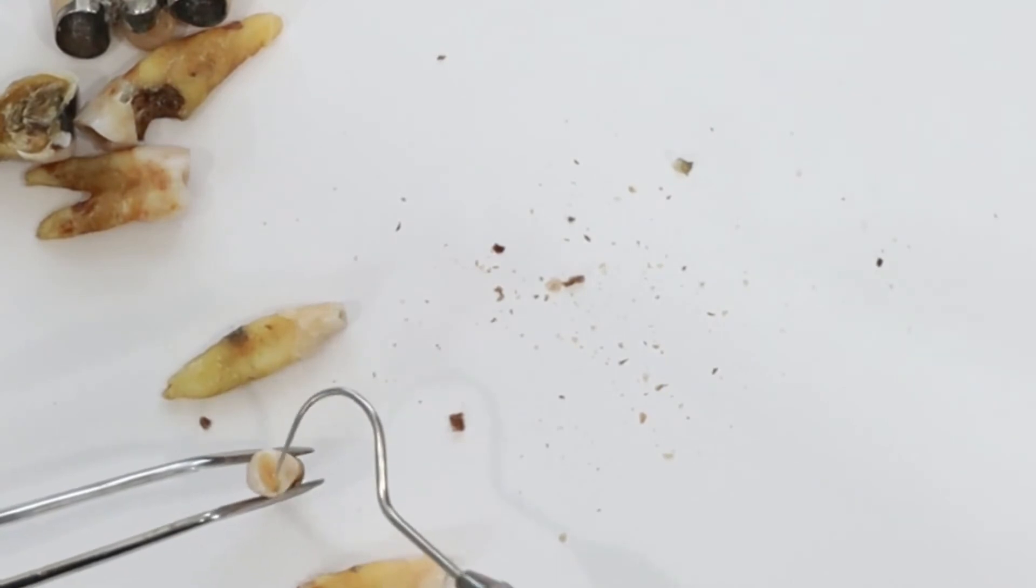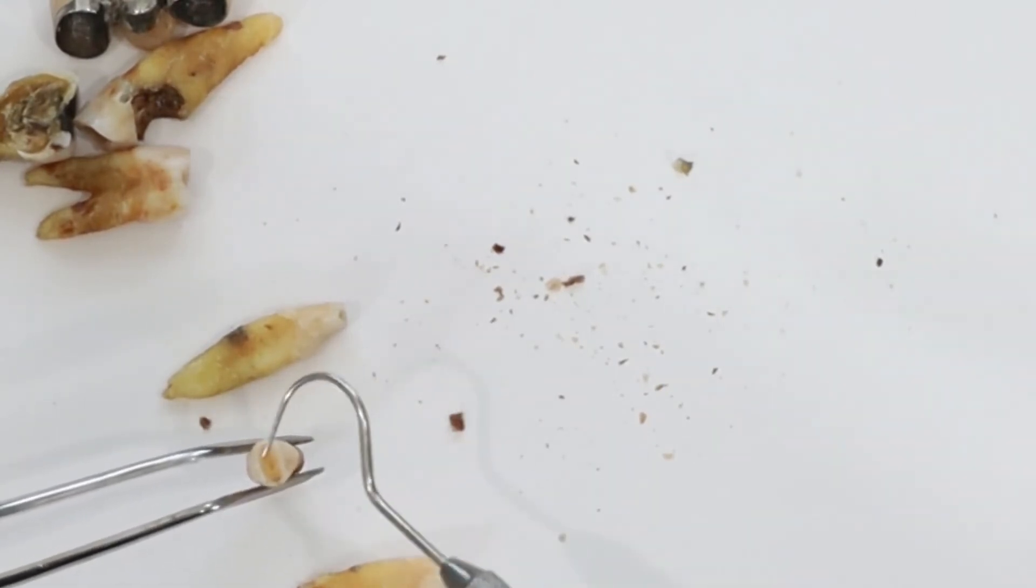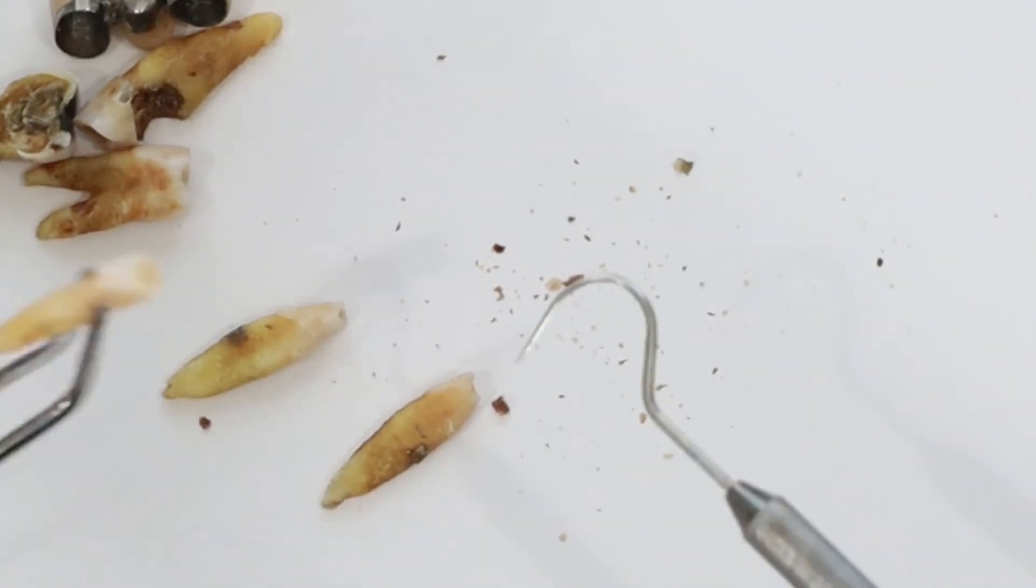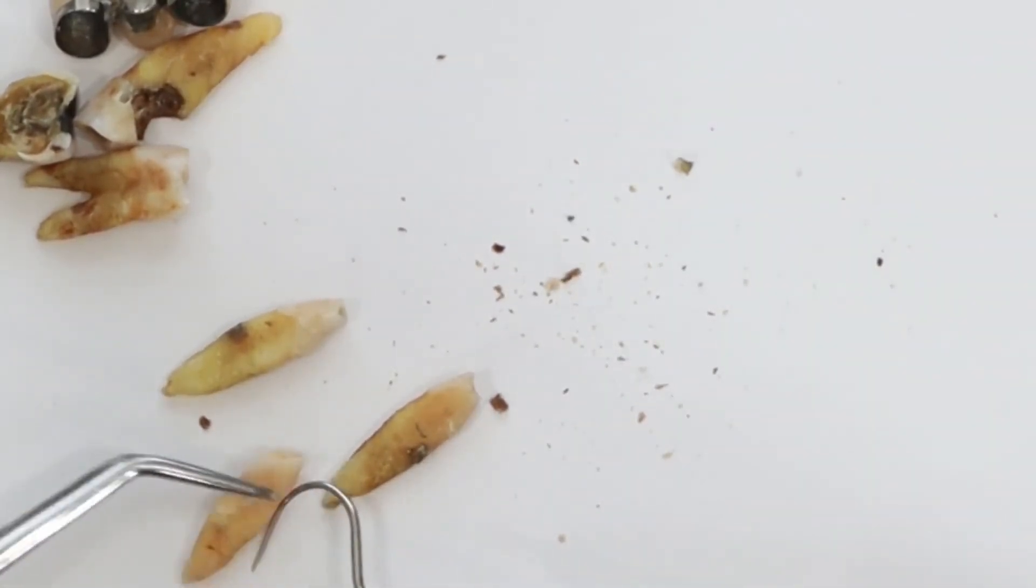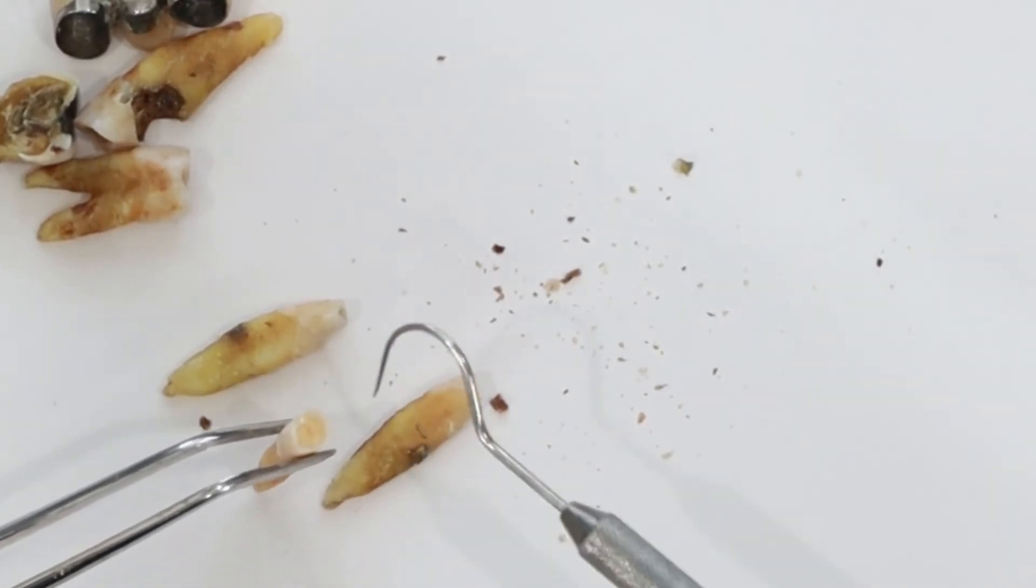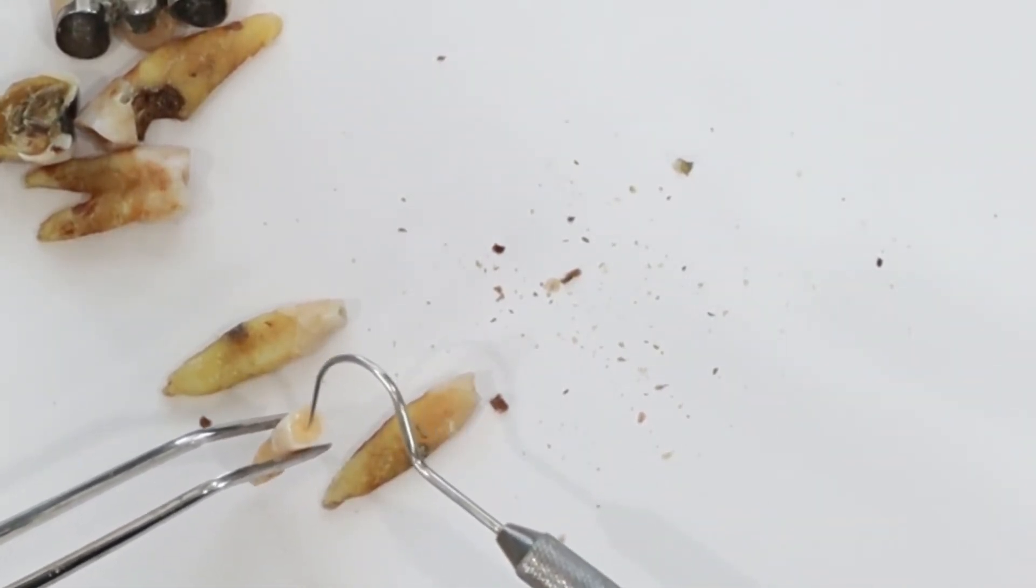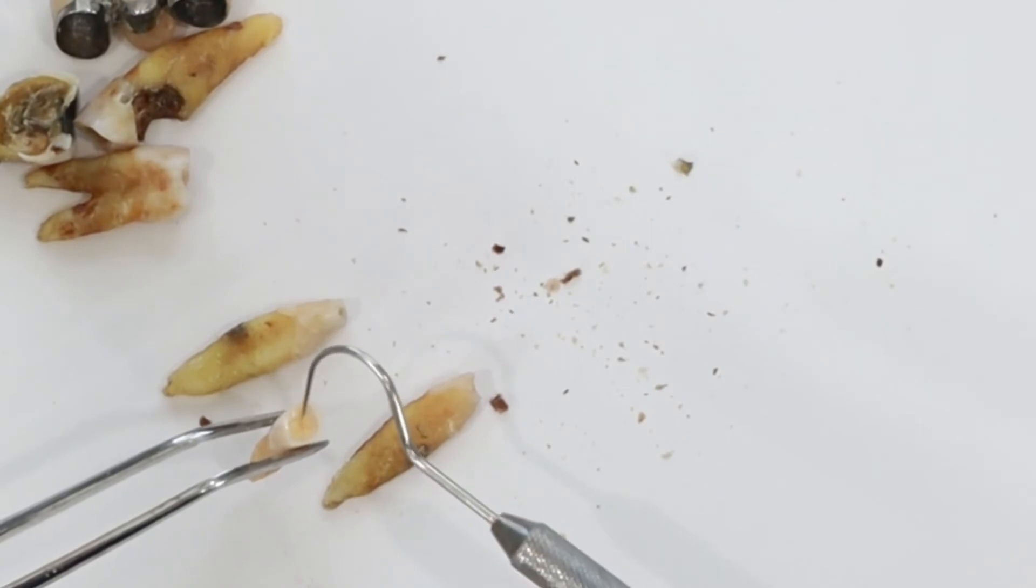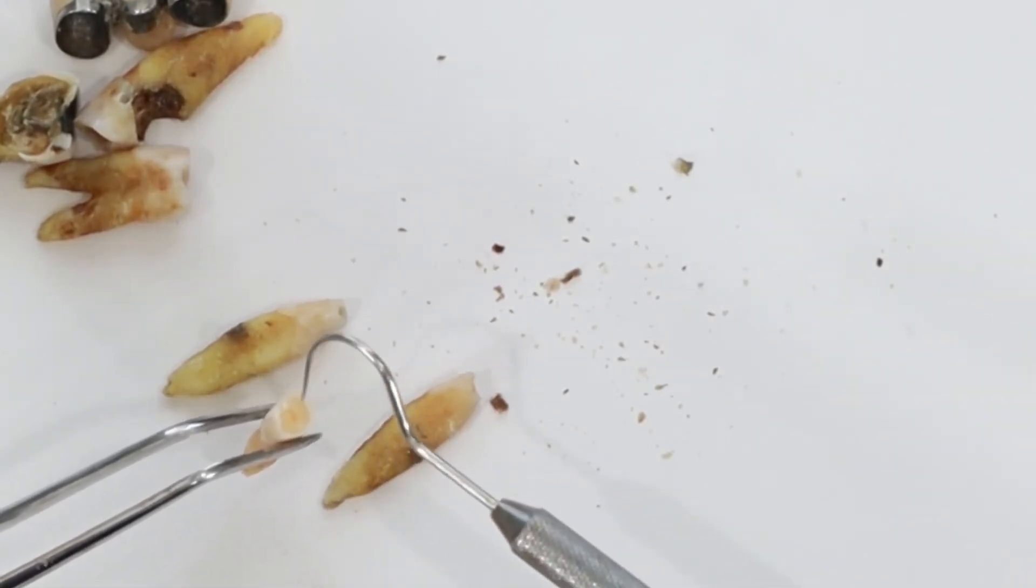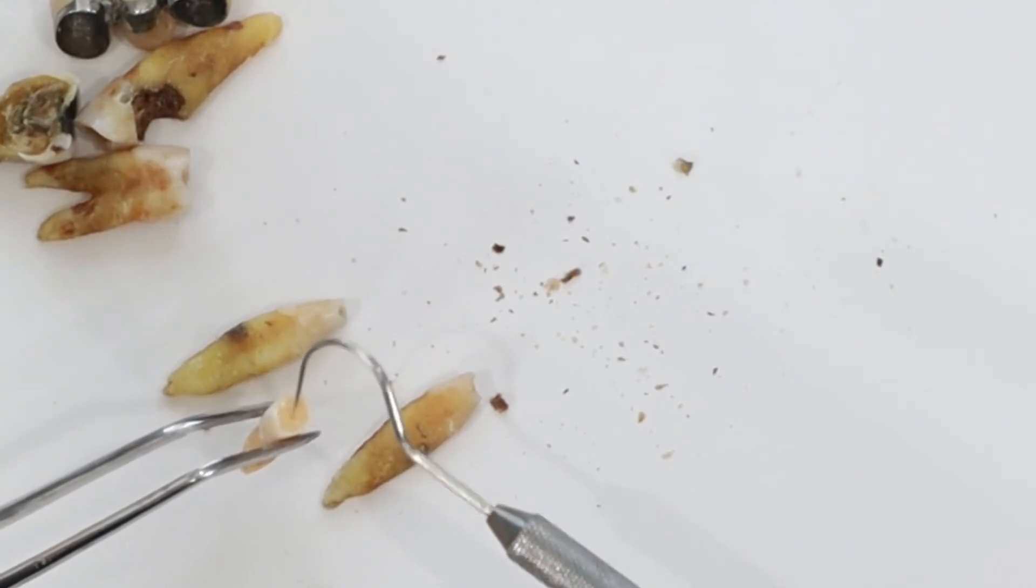You can see this one's pretty worn down. This one's probably the medium amount of wear. This guy here has the most amount of wear. Let me pull that up. As you can see if you look close it's almost worn into the nerve space there. The white on the outside is the enamel. This is the dentin. And then this little darker area right in the middle there, that's the nerve space.